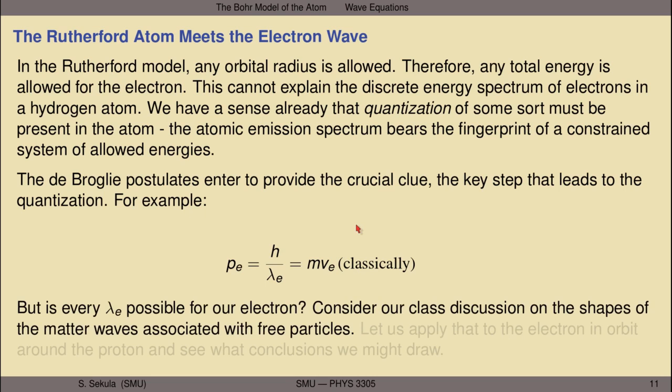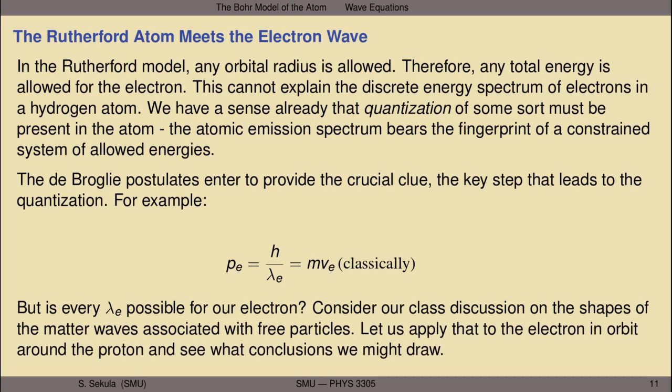If every momentum is allowed, every speed is allowed, and if every speed is allowed, every radius is allowed. This has consequences in a system where there are relationships between speed and orbital radius, speed and momentum, and momentum and wavelength. But maybe the problem is that not every wavelength of a matter wave for our electron orbiting this central proton is actually allowed. We had a discussion about the Schrödinger wave equation, where I drew the real part of free particle wave functions on the board and invited you to discuss whether those wave functions made physical sense. Let's revisit that discussion and apply it to the electron in orbit around the proton.